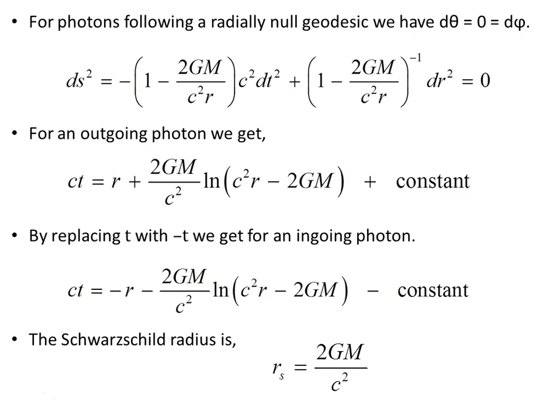This video follows up on the ninth video in this series, Schwarzschild Geodesics number nine. Picking up on some of the results from there, we found that for photons following a radially null geodesic, dθ and dφ — the angular differential — is zero, and that left us with the line element in a simplified form. For photons travelling along a radially null geodesic, this line interval is zero.